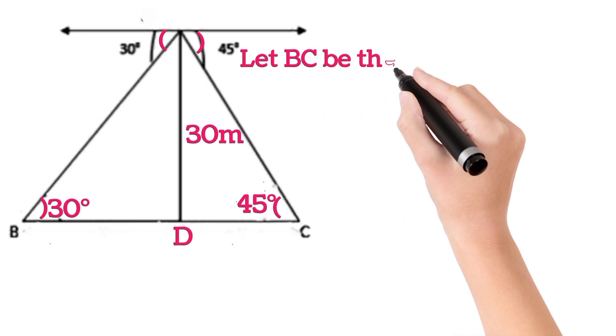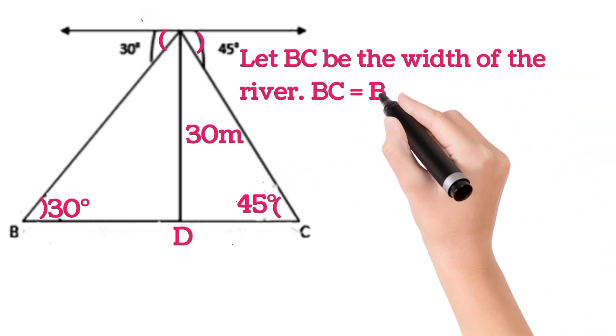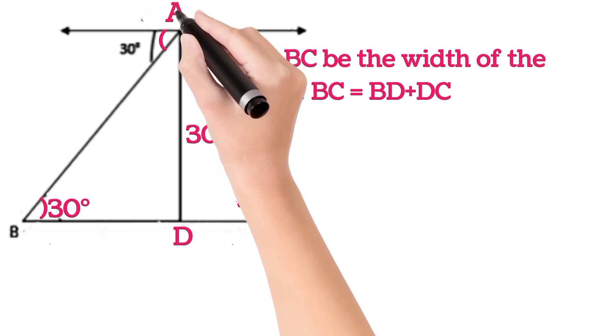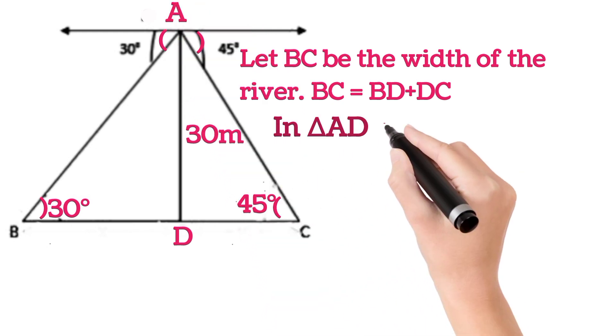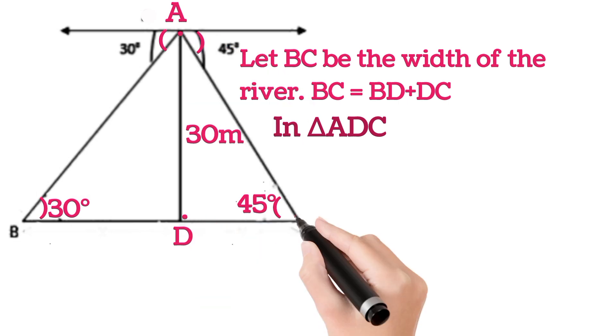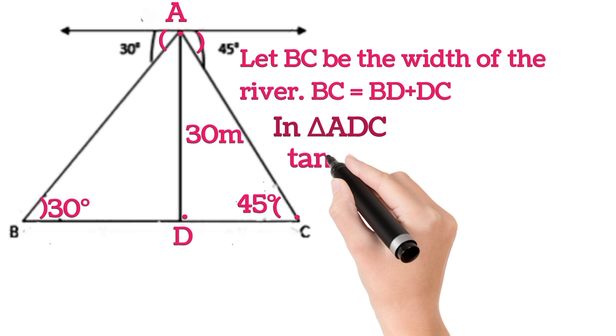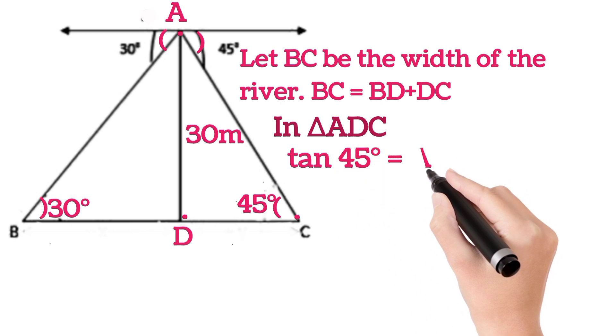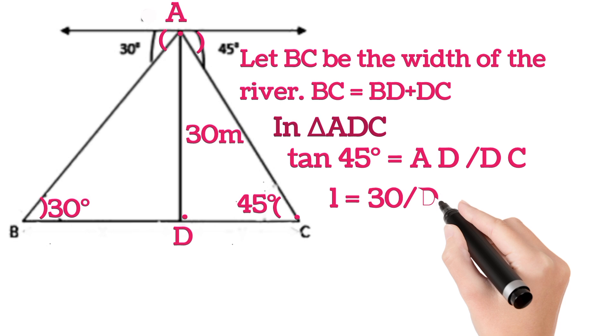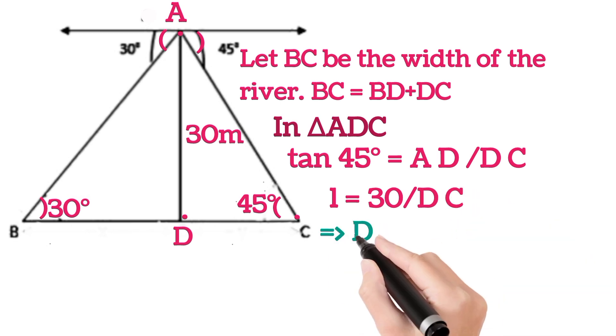Now we know that BC is the width of the river, so BC can be written as BD plus DC. Now this point is A. So in triangle ADC, this is the right angle triangle, so we can write tan 45 degrees is equal to AD upon DC, that is perpendicular upon base. Tan 45 degrees is 1. AD is given 30 meters upon DC, which on solving will give DC is equal to 30 meters.